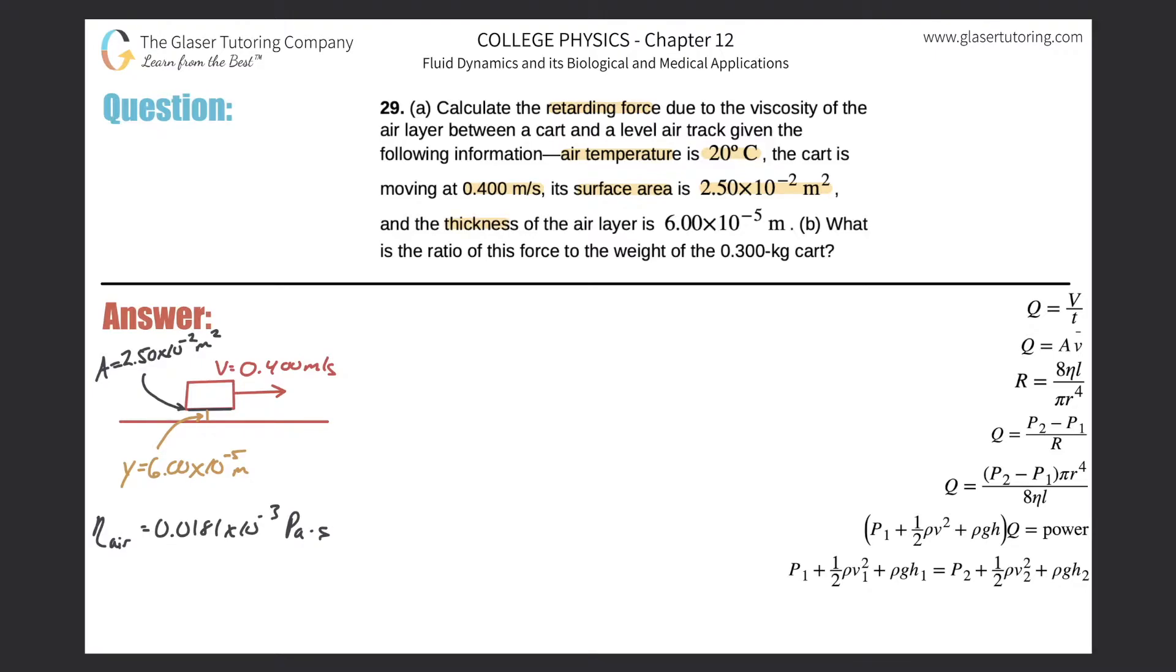of the air layer is 6 × 10^-5 meters. So here's all that information: the thickness between the bottom surface area of the cart and the track is 6 × 10^-5 m, the surface area is given, here's the velocity. We also need to know the viscosity of air at 20°C, and this is the value at the bottom.